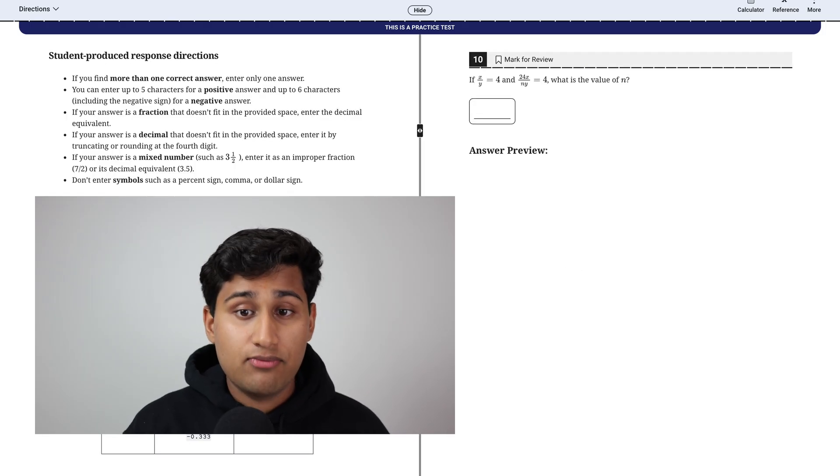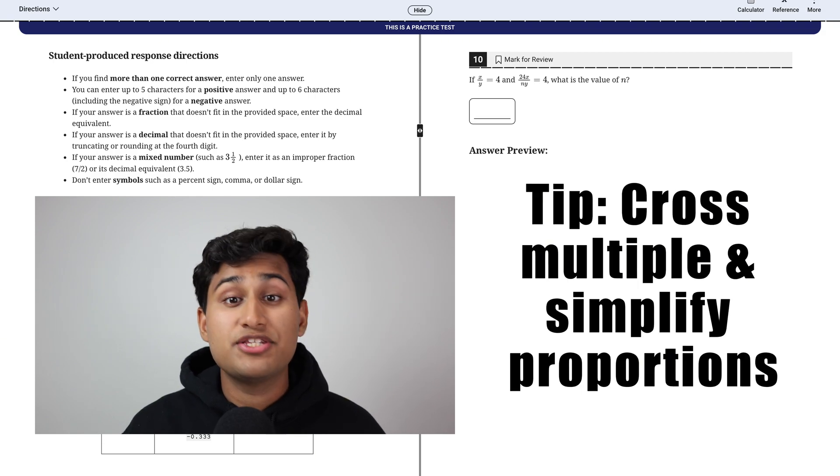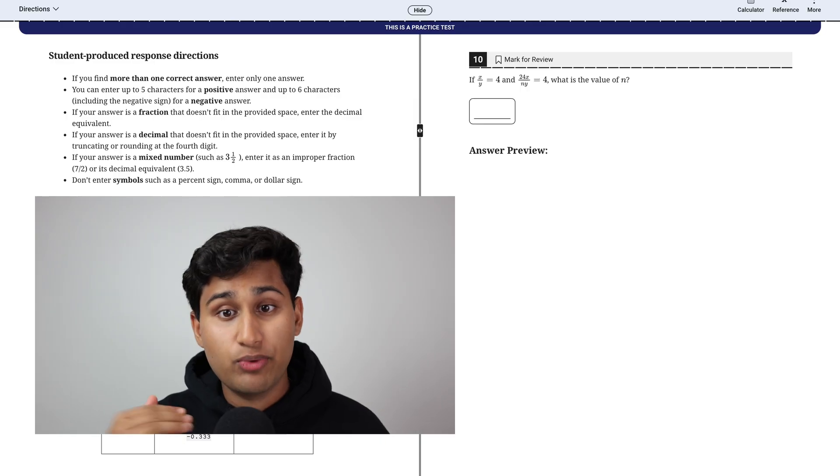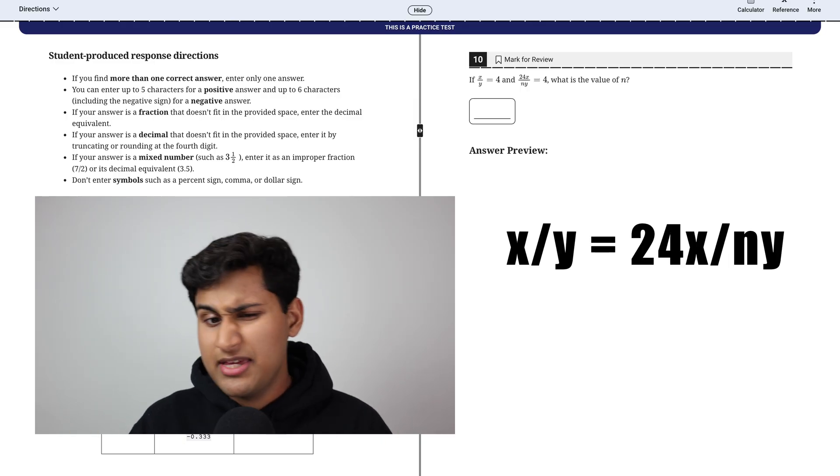So the next type of problem is rational expressions and equations. So my tip for this one would just be to cross multiply and simplify your proportions. You know that both of these proportions, X over Y and 24X over NY, they both equal four. So that means you can just set them equal to each other.